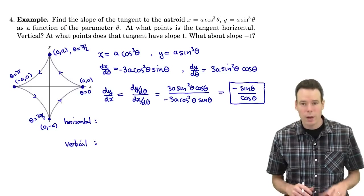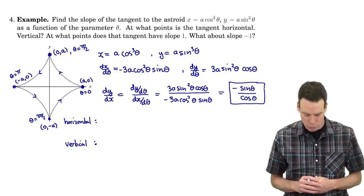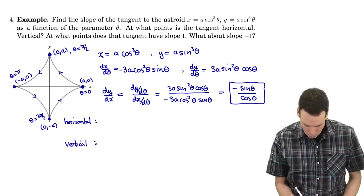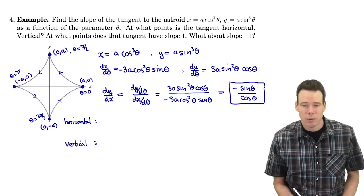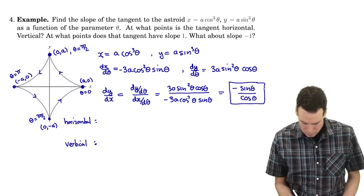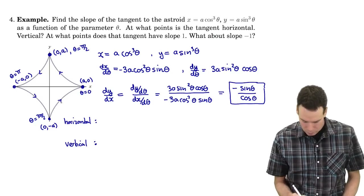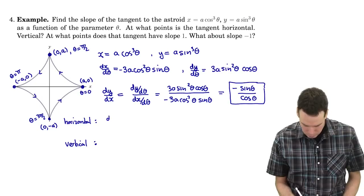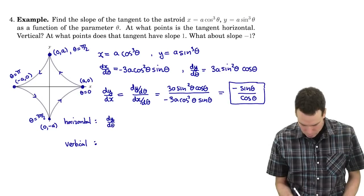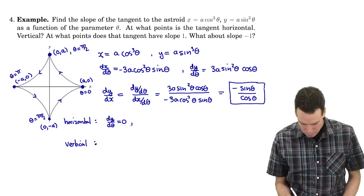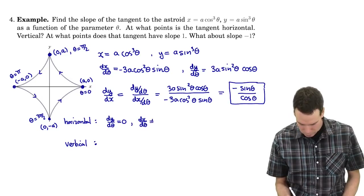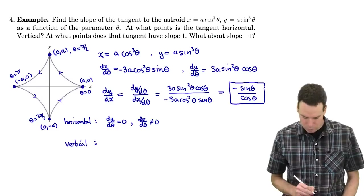Where is the tangent line horizontal? Horizontal means the derivative has to be 0. The derivative is dy/dθ over dx/dθ, so in order for that to be 0 we need dy/dθ to be 0, and we need to make sure the denominator, dx/dθ, is non-zero.